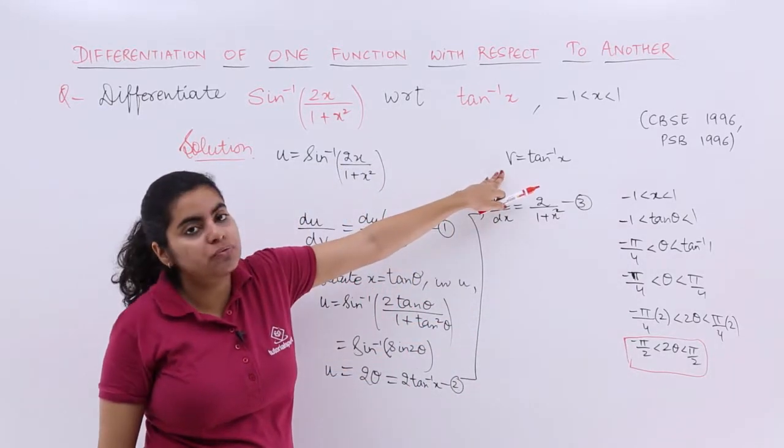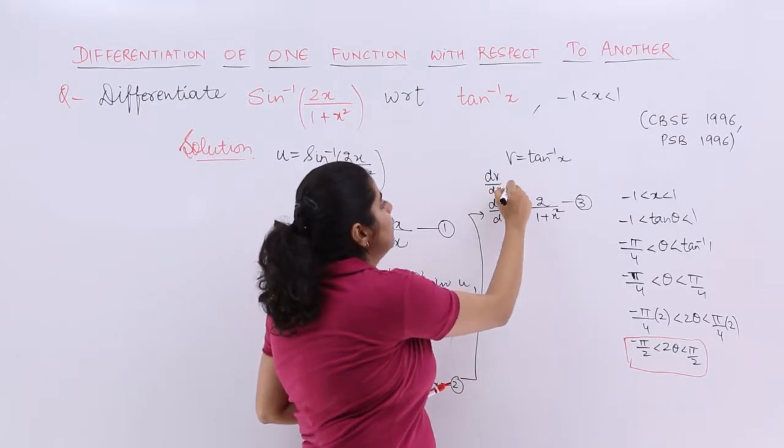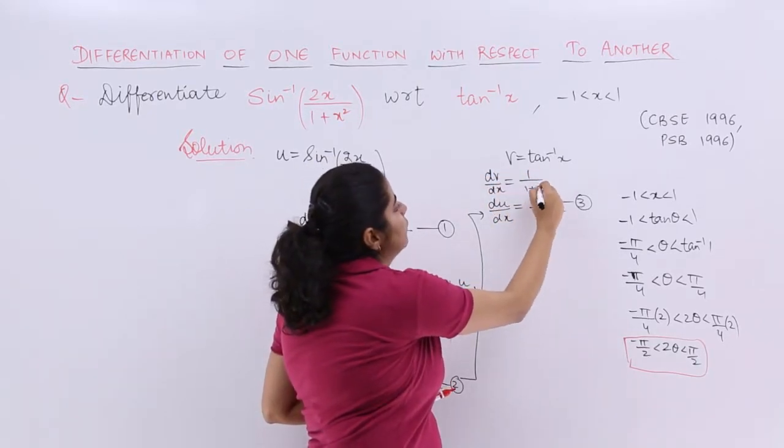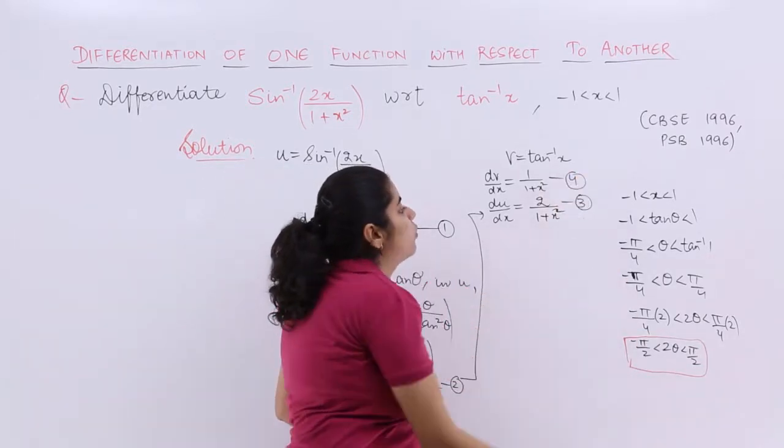And here we needed to find out dv by dx. Straight away you can find out here only dv by dx is differentiation of tan inverse x with respect to x, which is 1 upon 1 plus x square. Let's name this as equation number 4.